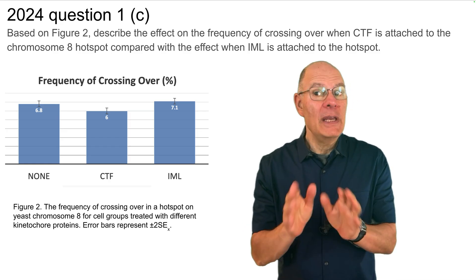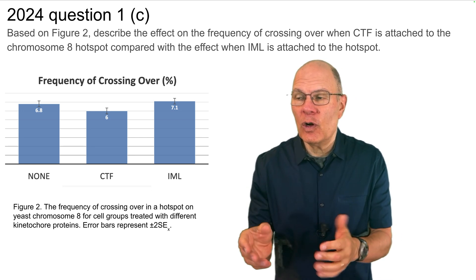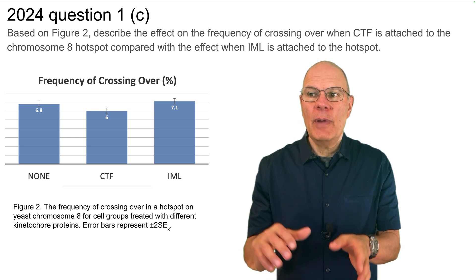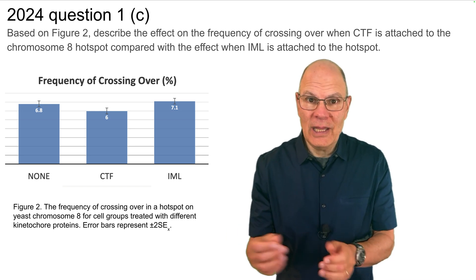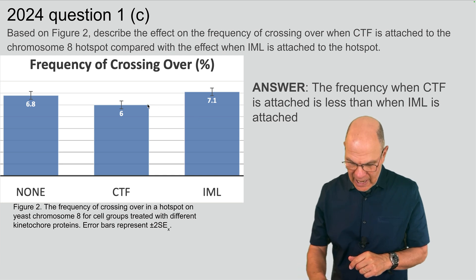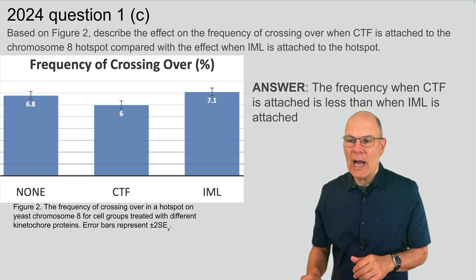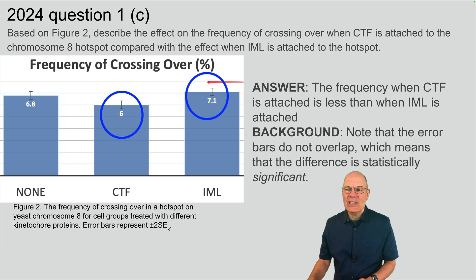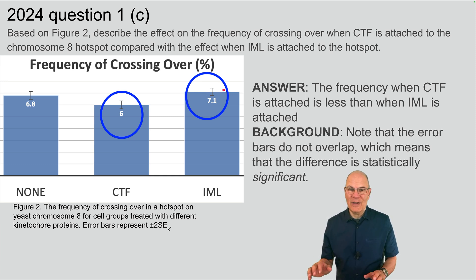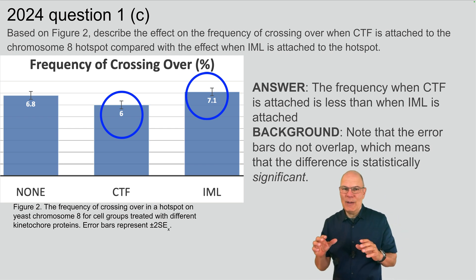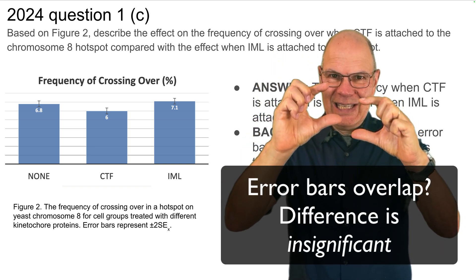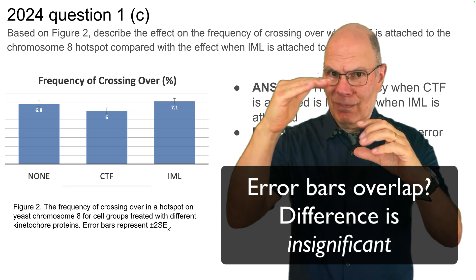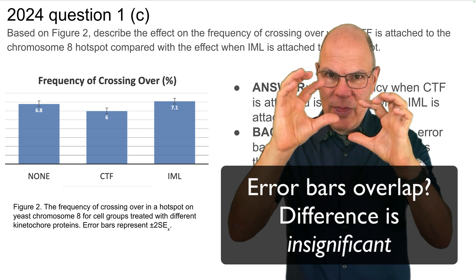Question 1c: based on figure 2, describe the effect on crossing over frequency when CTF is attached to the chromosome 8 hotspot compared with when IML is attached. This is a graph reading question. The frequency when CTF is attached is less than when IML is attached. The key is to look at the error bars — these error bars do not overlap, which means the difference is statistically significant. If error bars don't overlap, there's a significant difference; if they do overlap, the difference is not statistically significant and you can't claim a real difference between the two data sets.